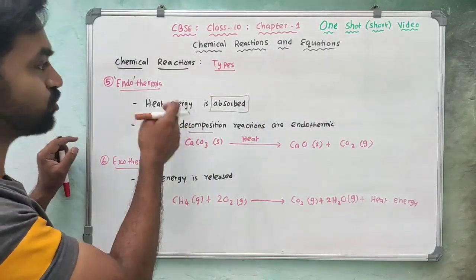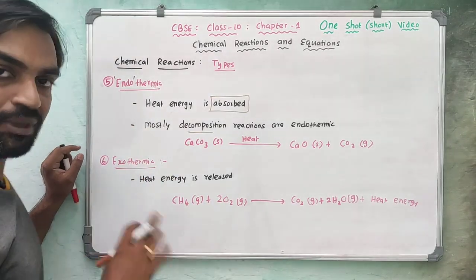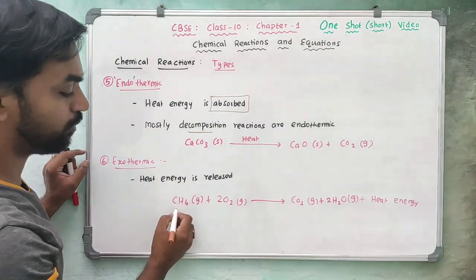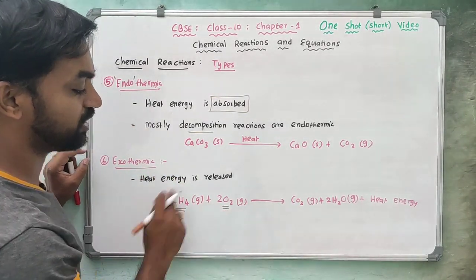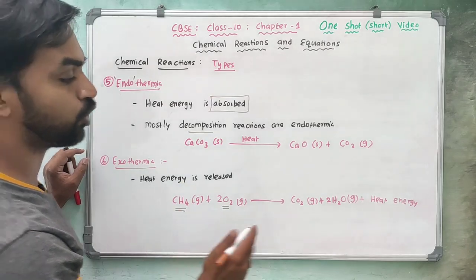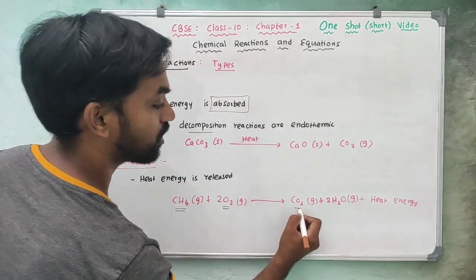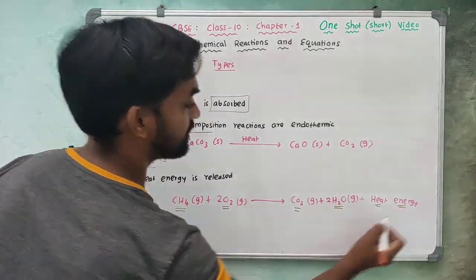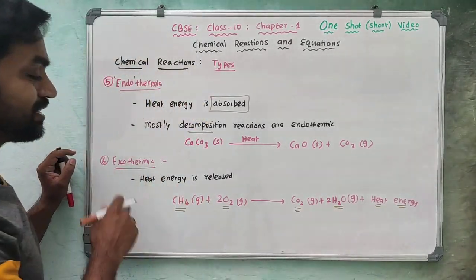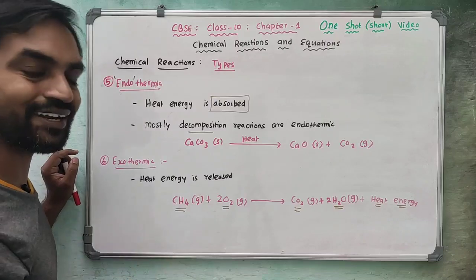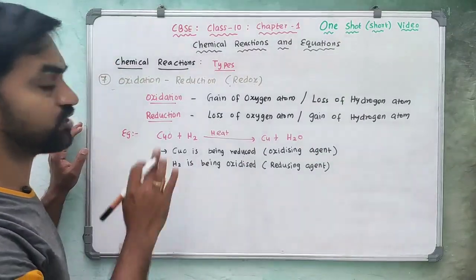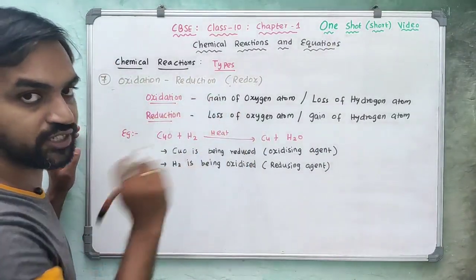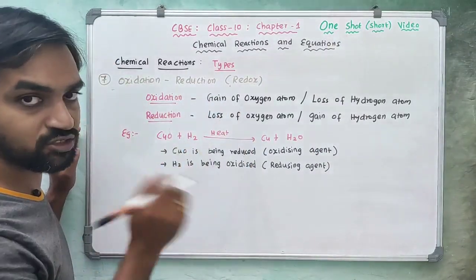Exothermic reaction: heat is produced. For example, methane reacts with oxygen to give carbon dioxide and water, releasing heat. This is an exothermic reaction. Next, oxidation-reduction — redox reaction.